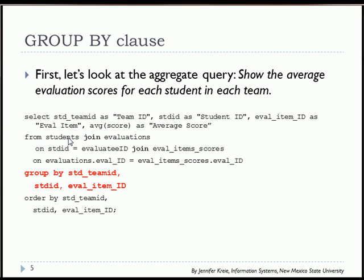I'm working with the students table joined to evaluations on primary key student ID to evaluate foreign key. Then I joined that result set with eval item scores, and I'm joining that with evaluations primary key eval ID and eval item scores eval ID as the foreign key.